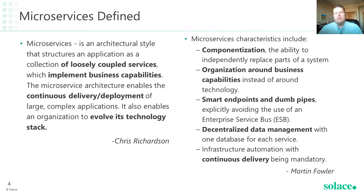Moving on to Martin Fowler's definition, he provides a list of characteristics such as componentization, which really implies loose coupling; being focused around business capabilities, not technology; smart endpoints and dumb pipes, which we'll talk about in depth shortly; decentralizing data storage and persistence; and continuous delivery. Both of these definitions have a lot of commonality, and your takeaway should be that it's an architecture comprised of loosely coupled services, organized around business capabilities, that enables CI/CD and the capability to evolve with technology.